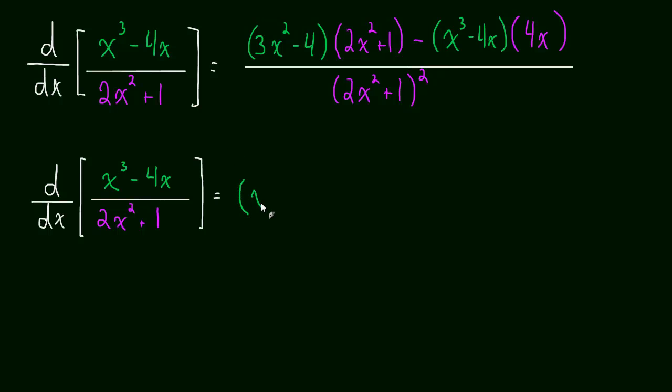Okay, so what I'm going to suggest is to rewrite this as the derivative of a product. And I'm going to do that by just using negative exponents. So this will be x cubed minus 4x multiplied by 2x squared plus 1 all to the negative 1.